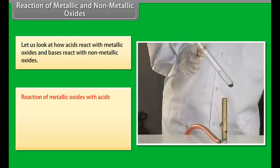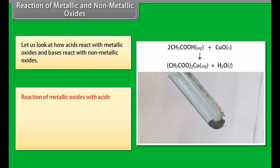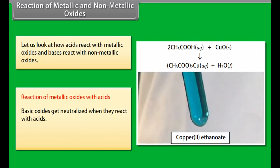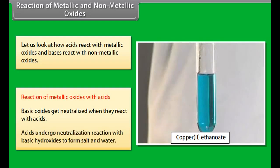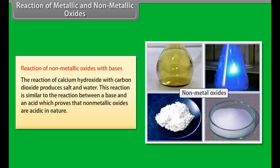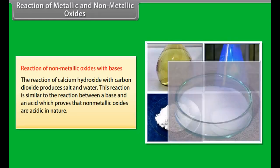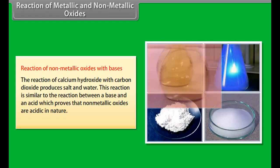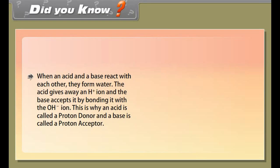Reaction of metallic and non-metallic oxides. Now that you have seen how acids and bases react with metals, hydrogen carbonates, and with each other, let us look at how acids react with metallic oxides. Reaction of metallic oxides with acids. Oxides that add on hydroxyl ions to their molecules are called basic oxides. These oxides get neutralized when they react with acids. Acids undergo neutralization reaction with basic hydroxides to form salt and water.